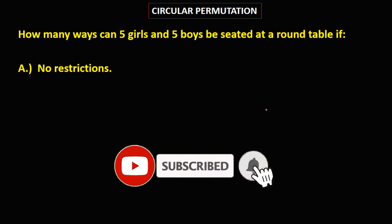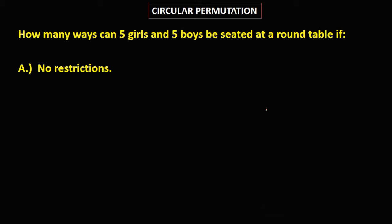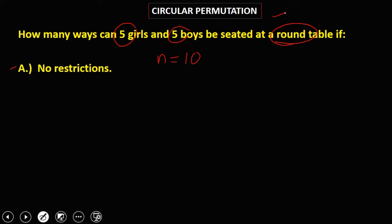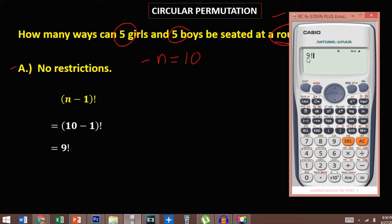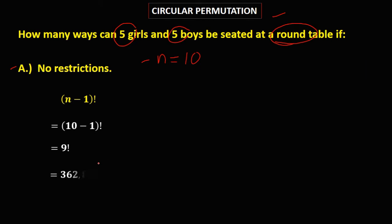How many ways can 5 girls and 5 boys be seated at a round table if there are no restrictions? Since there are no restrictions, n equals 5 girls plus 5 boys, which is 10. Using the circular permutation formula (n minus 1) factorial: 10 minus 1 factorial equals 9 factorial, which equals 362,880. So there are 362,880 ways.